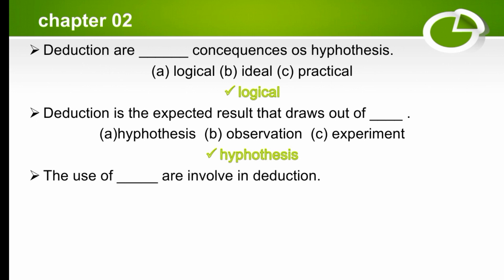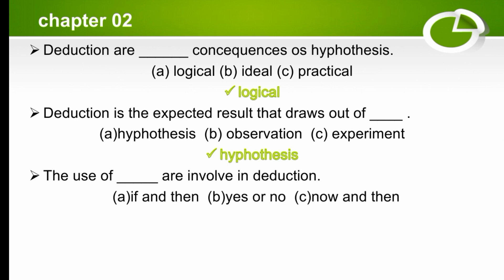Which two words are used in deduction? The options are 'if and then,' 'yes or no,' or 'now and then.' In deduction, the two words used are 'if and then,' so the right option is A.